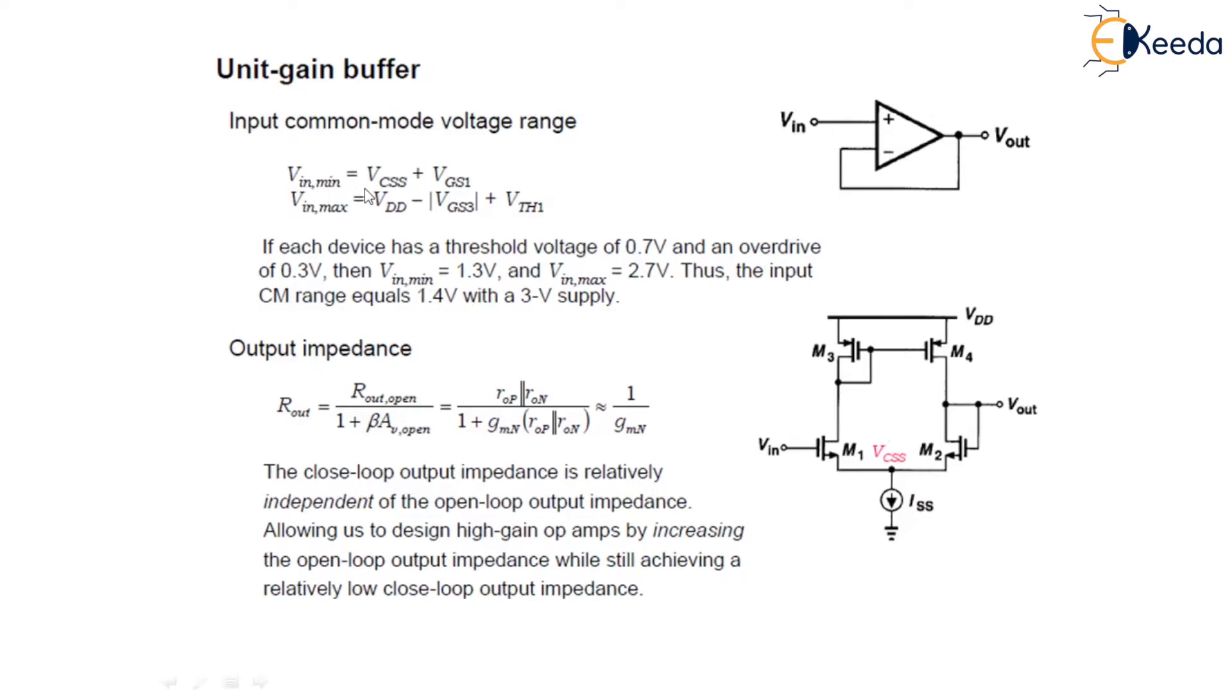In this case, the VIN-min is given as Vcss plus Vgs1, where Vcss is the voltage required across the current source. VIN-max is given by the level that places M1 at the edge of the triode region. In this case, VIN-max equals Vdd minus Vgs3 plus Vth1.